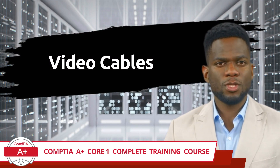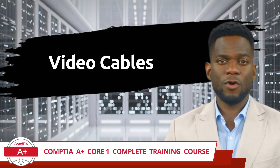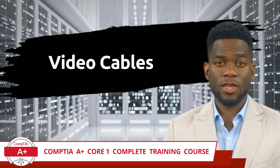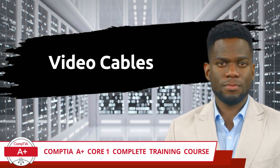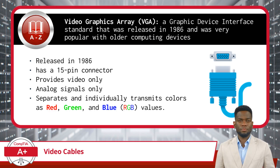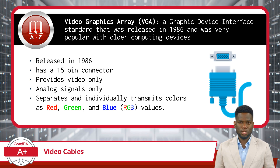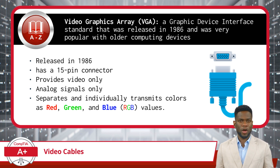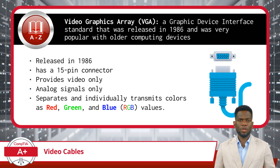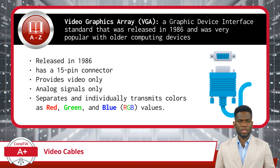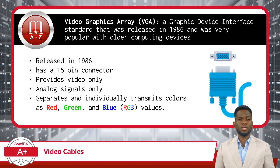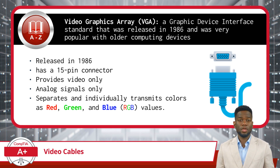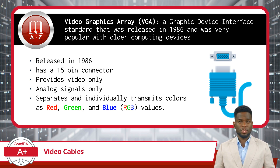CompTIA A Plus Core 1 Complete Training Course, Exam Objective 3.1: Explain Basic Cable Types and Their Connectors, Features, and Purposes. Video connectivity in the realm of information technology involves a wide array of cable options, each capable of transmitting visual and sometimes audio signals between various devices such as computers, monitors, TVs, and projectors. These cables play a crucial role in ensuring seamless communication and display of digital content. In this video, we will discuss several different types of video cables, their purposes, and how they have evolved over time to meet the demands of modern technology.